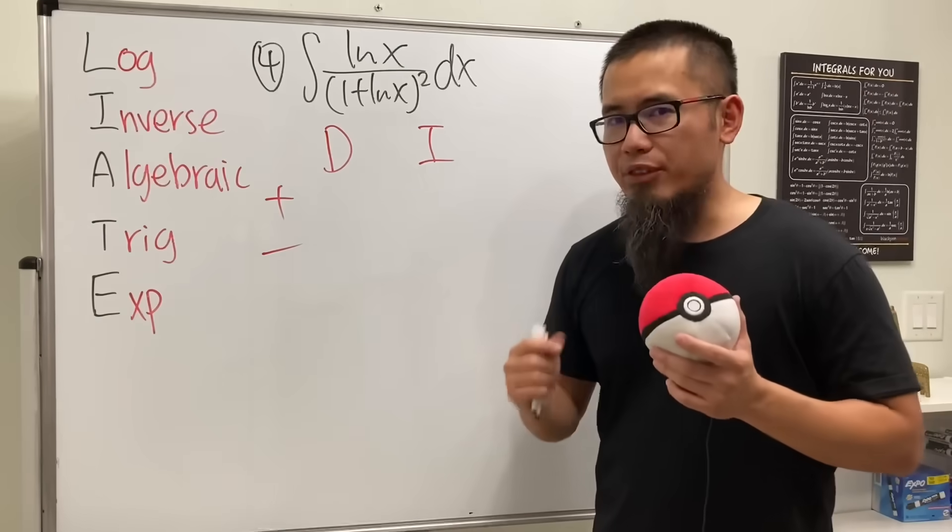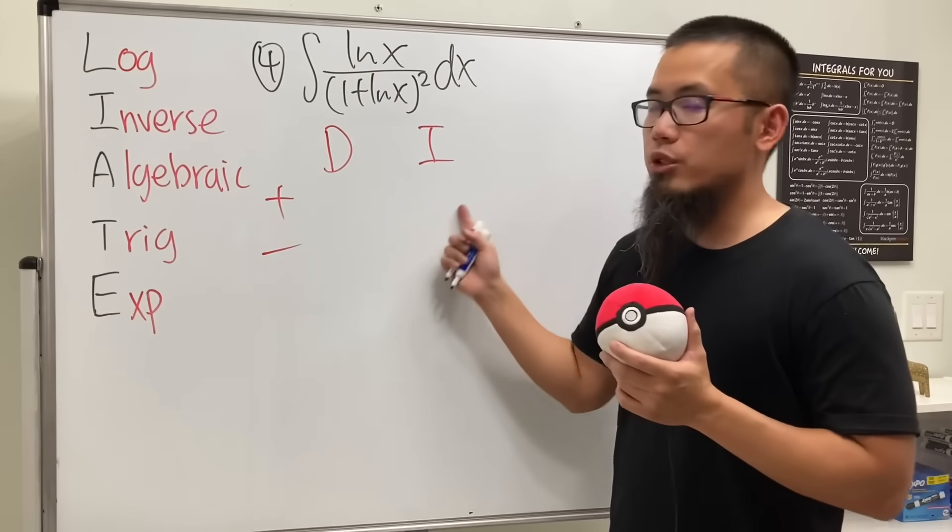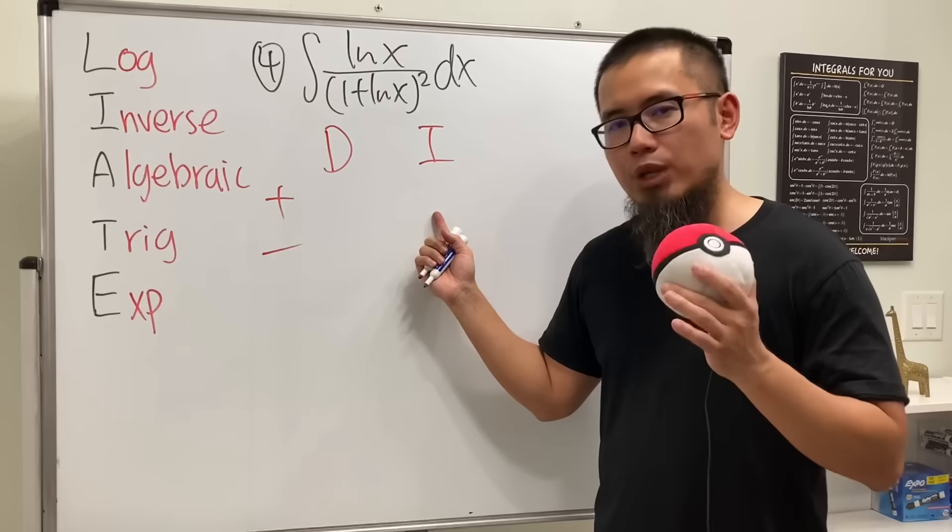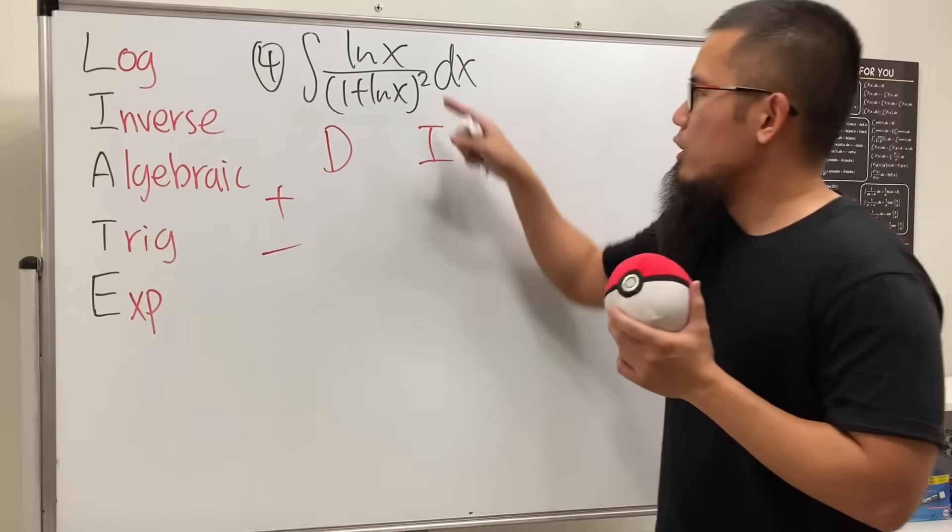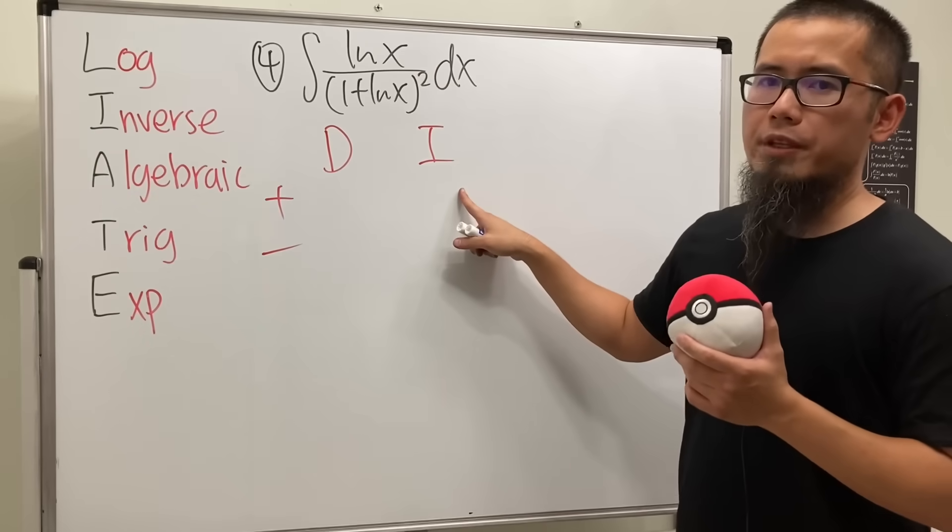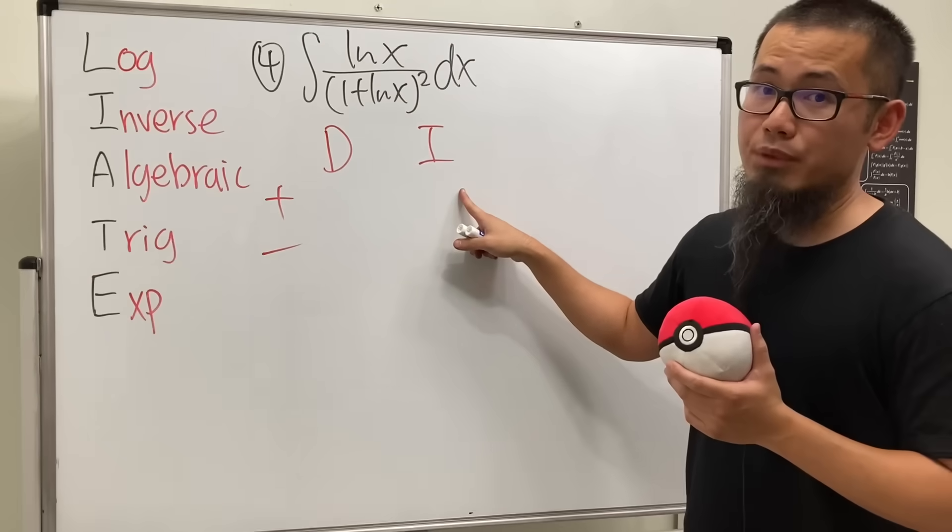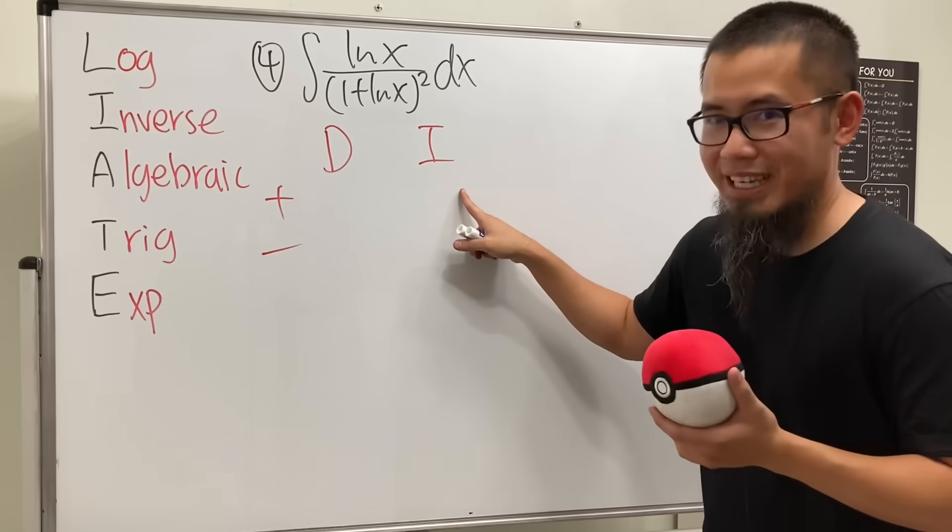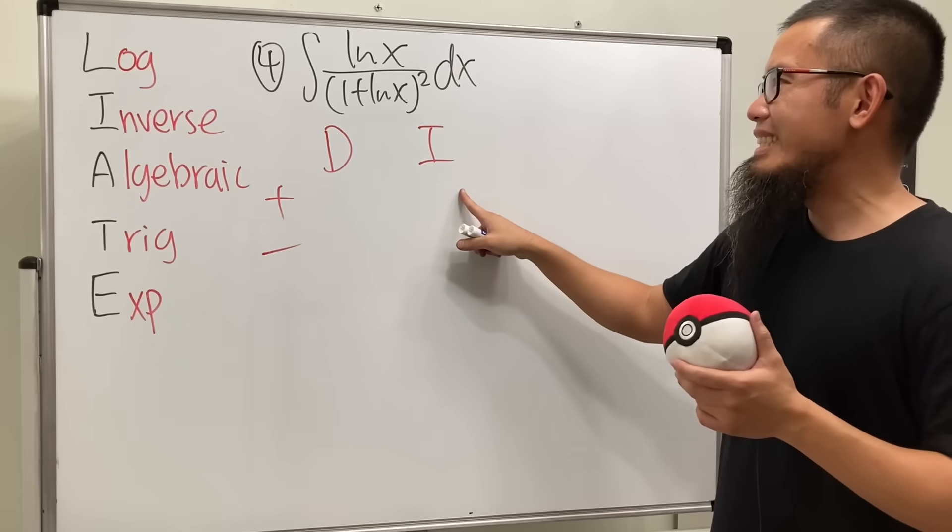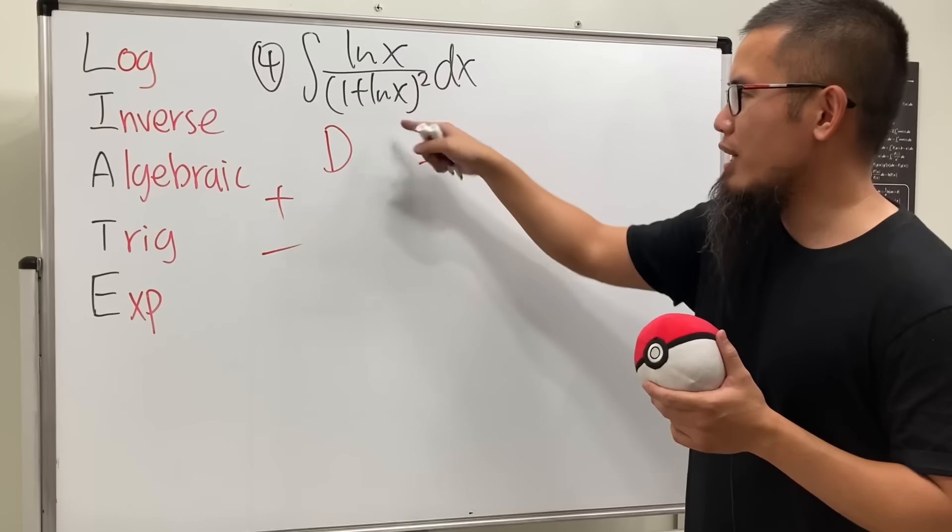We really just have to think about which part we should choose to be integrated first and we have to do it carefully. Should we just put down ln x right here to be integrated? No, because we have to do integration by parts for that, right?